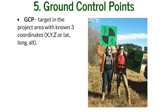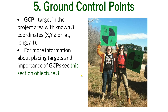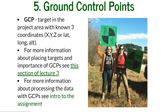Ground control points — here we can see the targets that were set out on one of our missions. Those targets have known three-dimensional coordinates X, Y, and Z. We place them on the ground and measure the center with GPS. For more detail, I'm redirecting you to the section in lecture three, and how to process data with ground control points is also written in the short unrecorded lecture entry for the assignment.